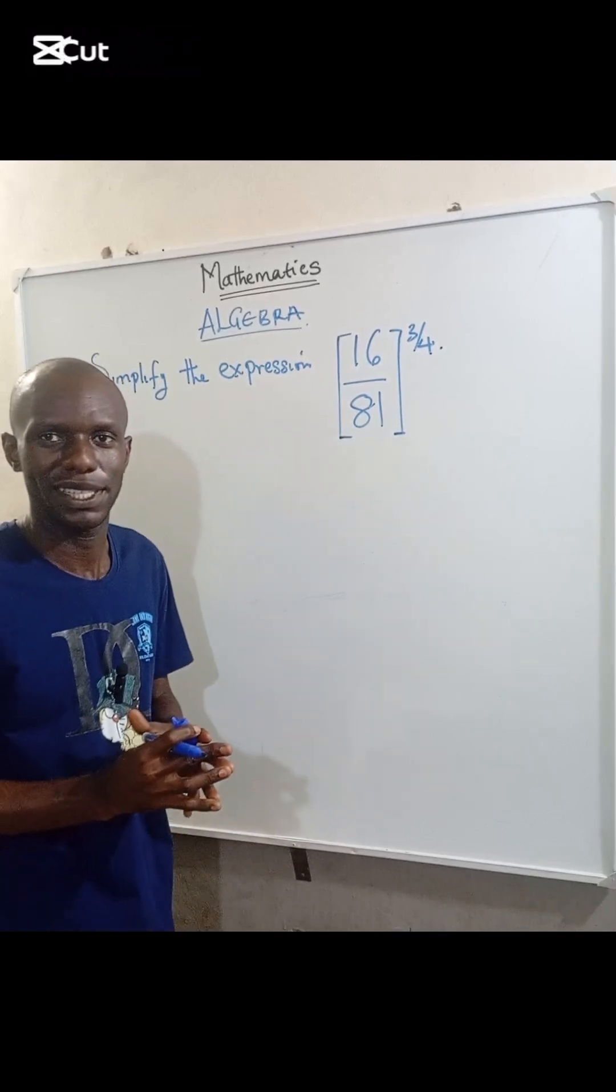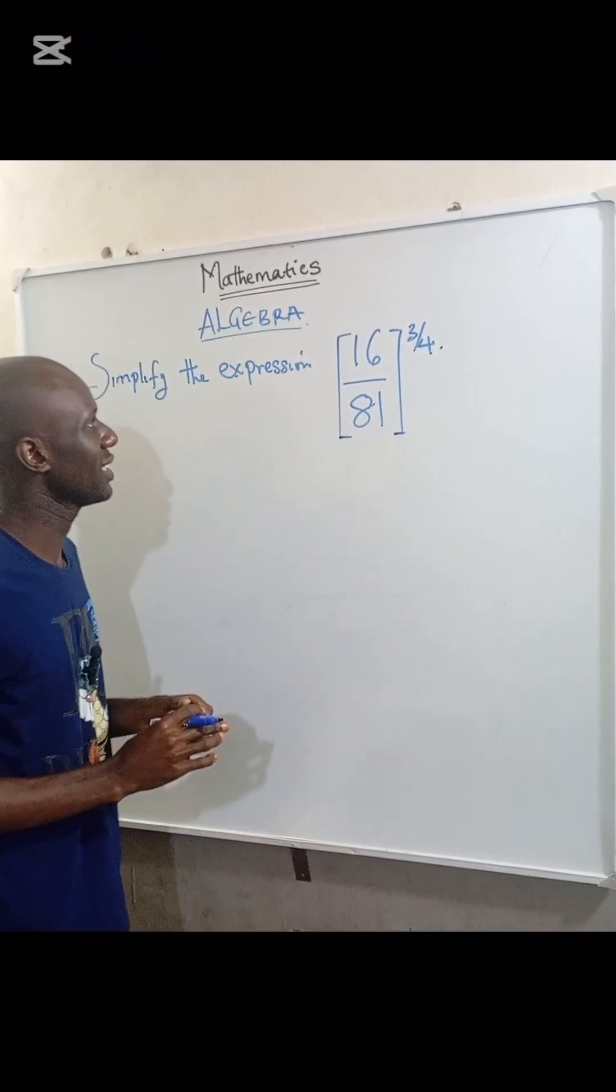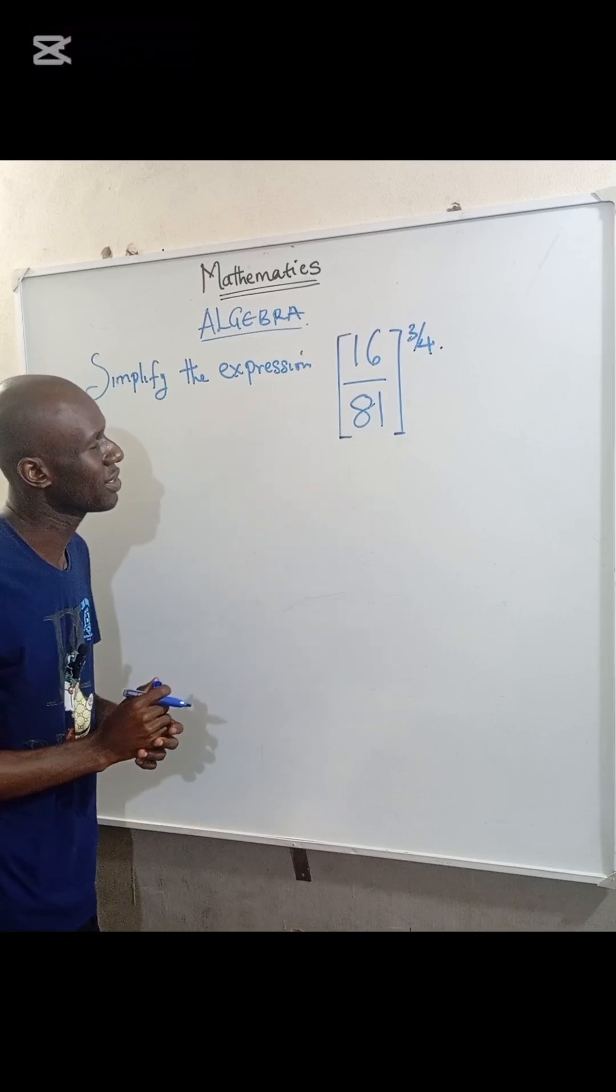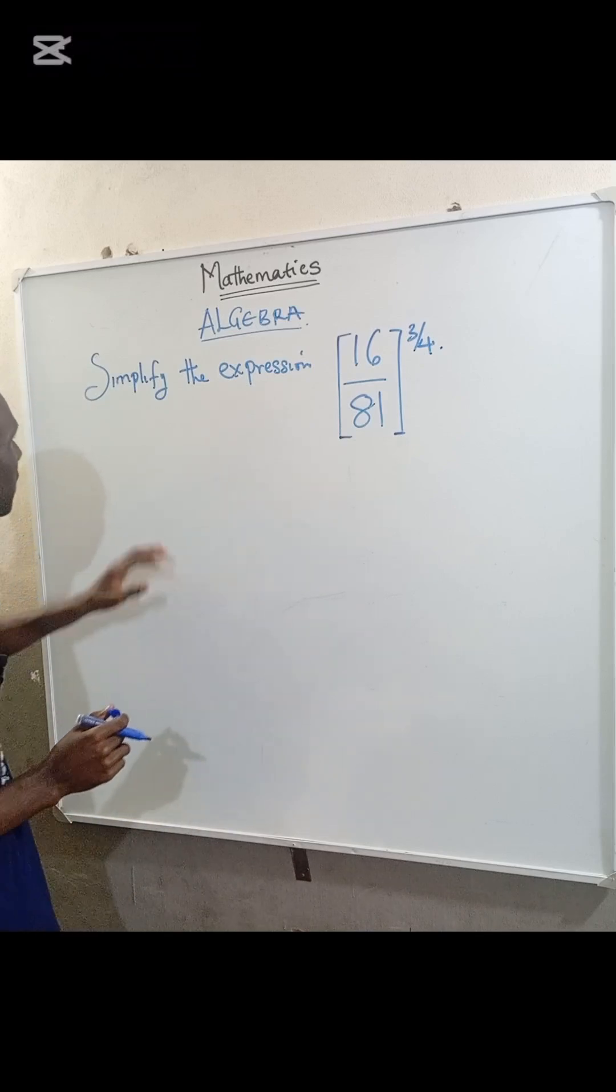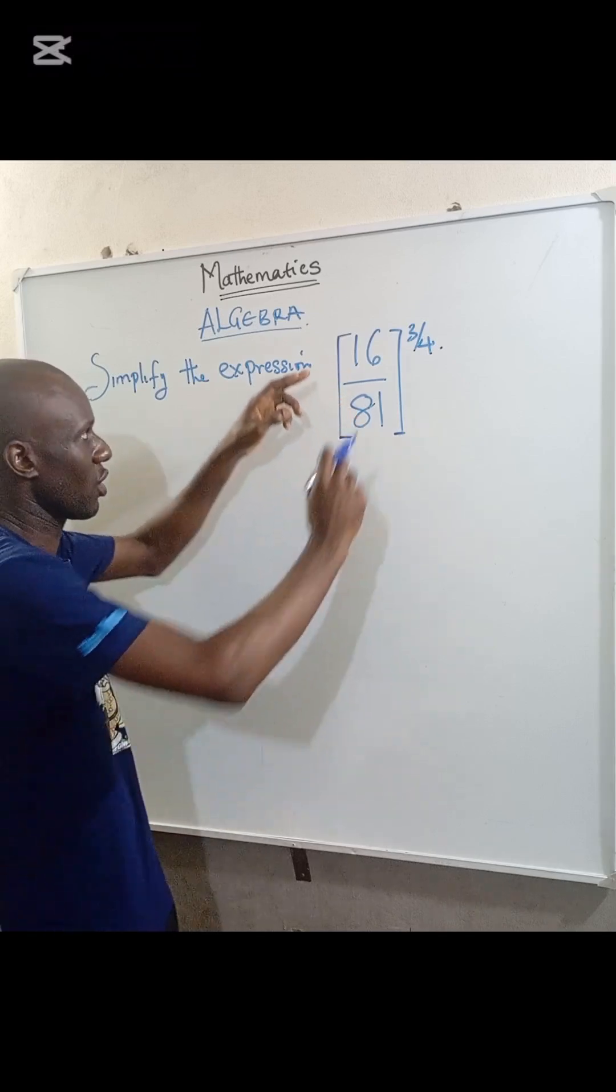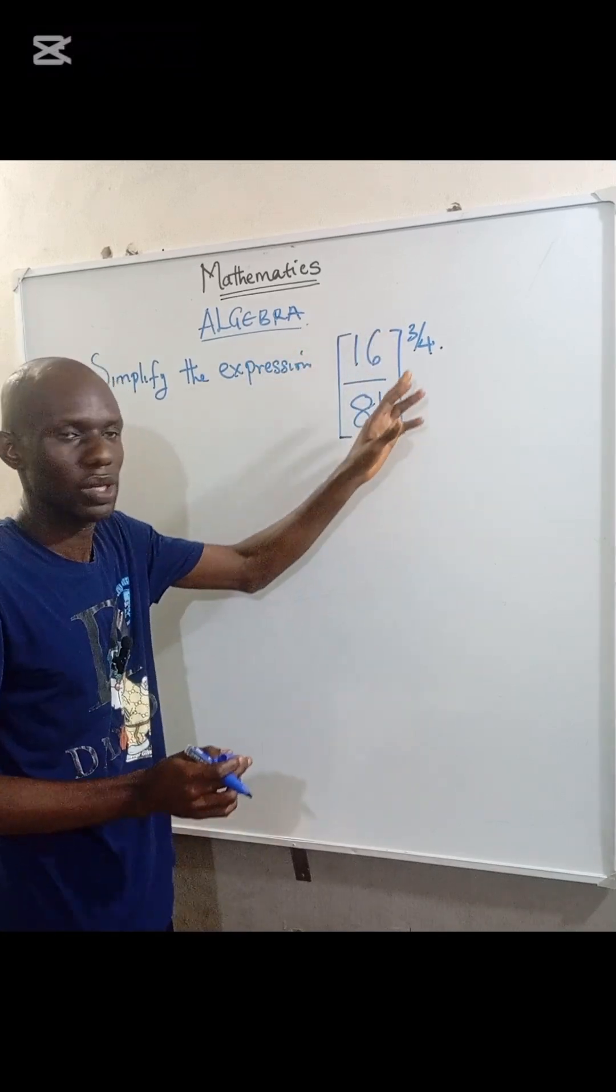Welcome to Radiant Minds Academy. Today we simplify this exponential expression. We are asked to simplify the expression: 16 divided by 81, all enclosed in a bracket with the power of 3 divided by 4.